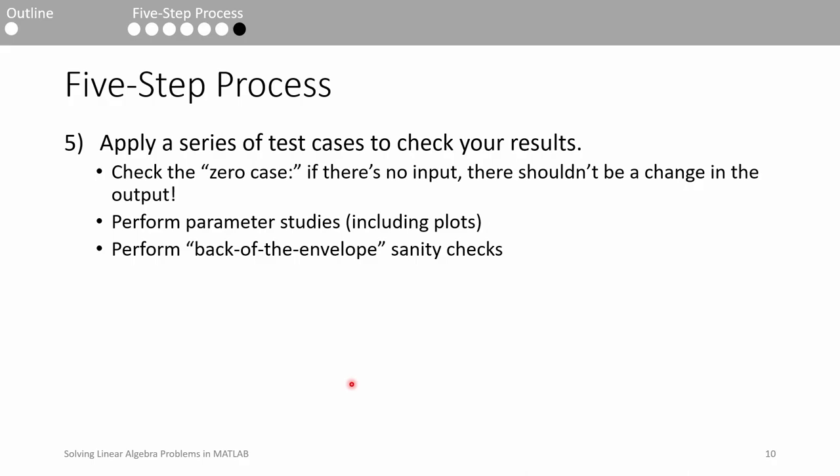The last step is to check your answers using some test cases. One test case you can always rely on is the zero case. In the zero case, you make the entire B vector the zero vector. Since the B vector represents an external agent acting on the system, there shouldn't be any change in the response if you don't disturb the system. You should also perform parameter studies to see if there are any patterns that arise in the response. For example, if you're solving a simple circuit problem, it would probably make sense to observe an increase in the current as you increase the voltage you apply because of Ohm's law. If you don't notice that trend, it could indicate that something is wrong.